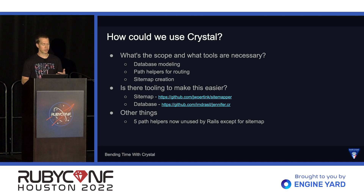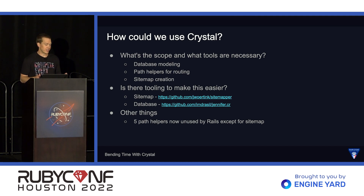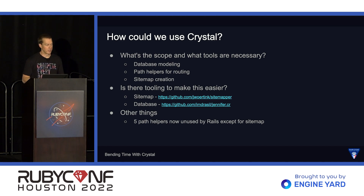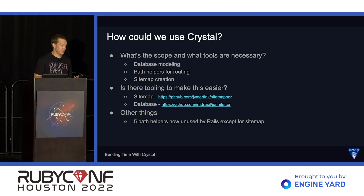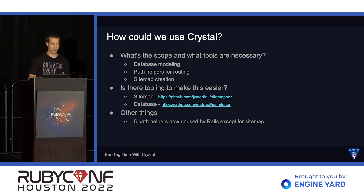Now that we've established what we want to achieve, we can consider whether Crystal would be feasible to achieve it. The first things to examine are the scope of the problem and what tools are necessary to solve it. First, we need to be able to access the database — we have all that data we've talked about. We also have some path helpers for routing. And then obviously, we have the actual sitemap creation.